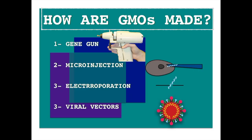There are different ways to insert the gene, but the most commonly used ones are a gene gun, in which you use a laboratory gun to fire the DNA into the cells you want to genetically modify. Then there's microinjection, which is most used to create GM animals, in which the DNA is directly transferred into the cell nucleus.